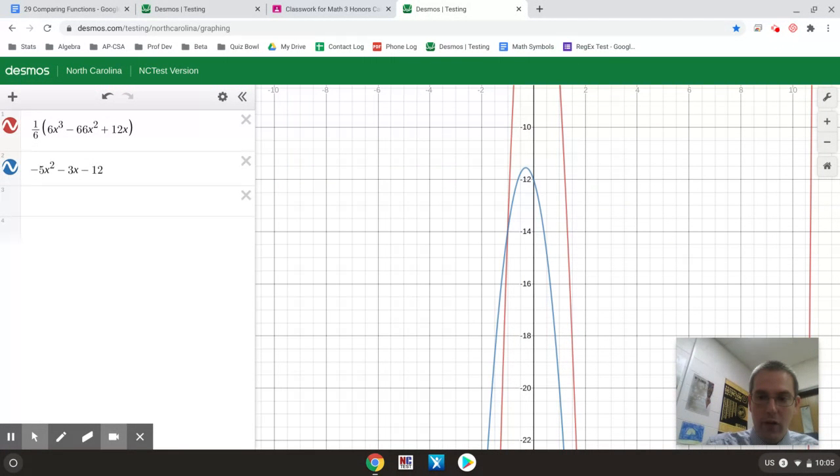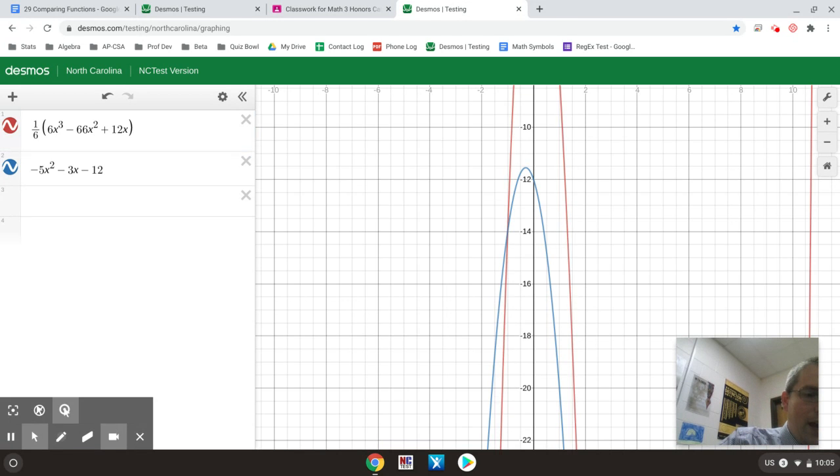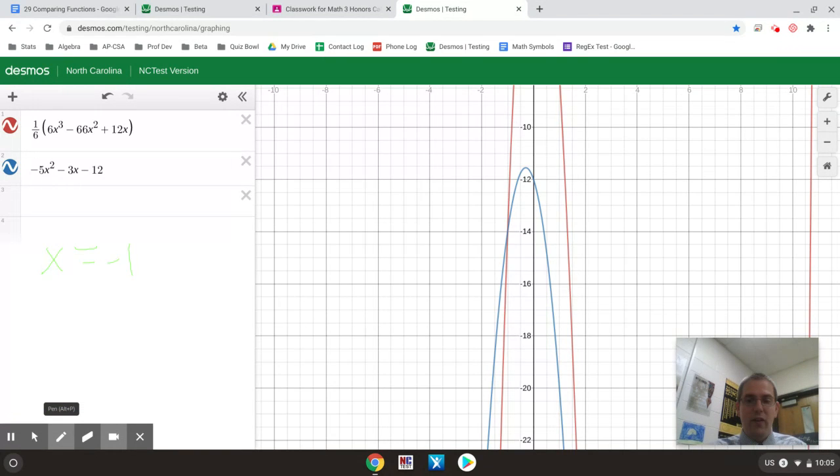And here is one intersection there at the point negative 1, negative 14. So one value, one intersection, would be x equals negative 1. The negative 14 is not what we're going for since we're looking for the x value that makes it 0.